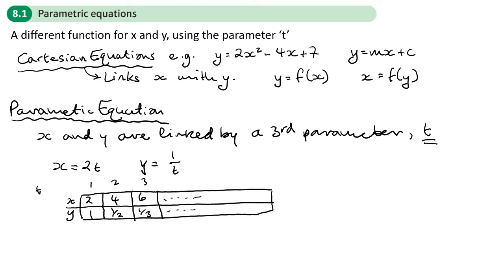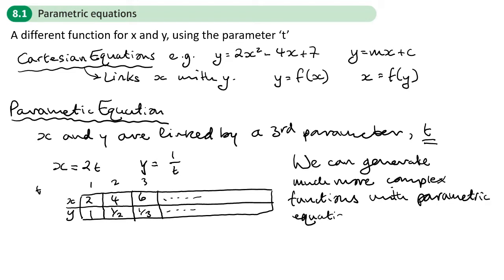Now that's a very simple one, but parametric equations allow you to generate more complex looking graphs and equations, ones that you couldn't get if they were a Cartesian equation. So we can generate much more complex functions. They have applications in mechanics because if t is time, x and y might represent the position, the two-dimensional position of an object. So that's the main difference.